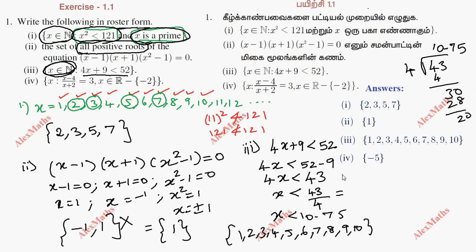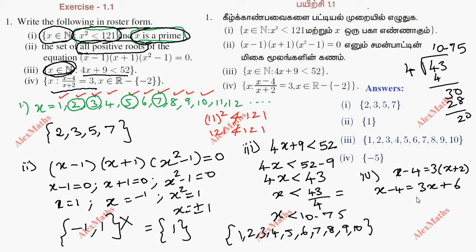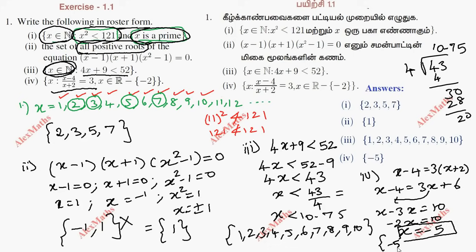Last subdivision: x is such that x minus 4 divided by x plus 2 is equal to 3 in x plus 6. Solving: x minus 3x equals 10, so minus 2x equals 10, giving x equals minus 5. So the answer is x equals minus 5, and the roster form is equal to minus 5.